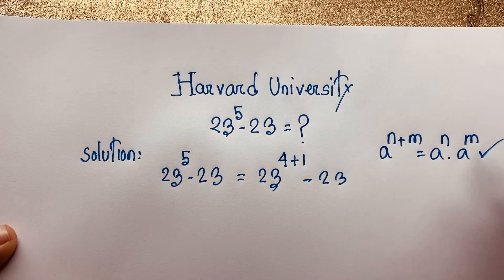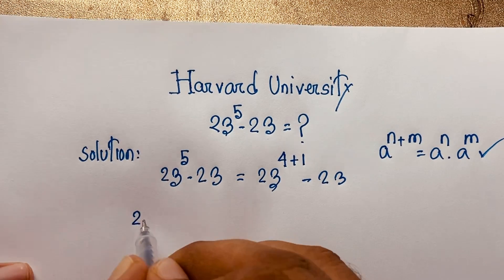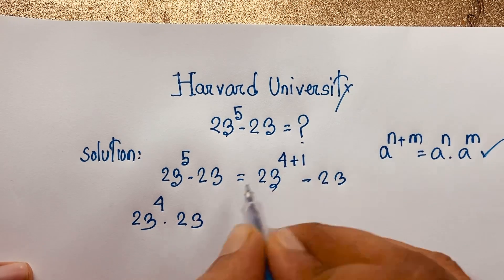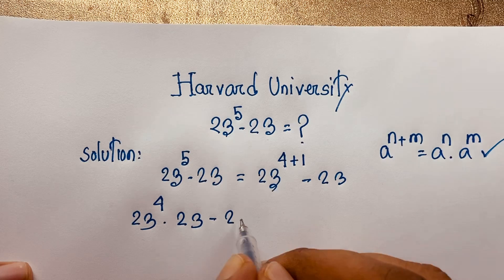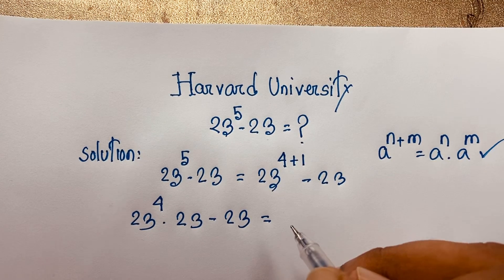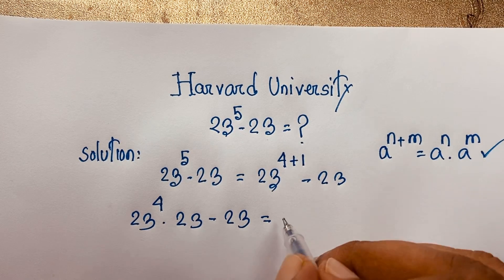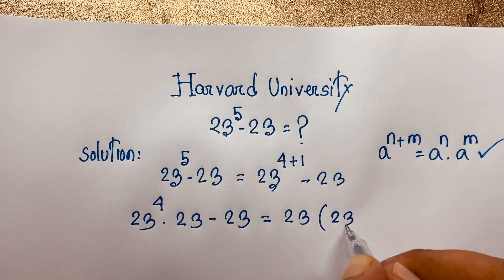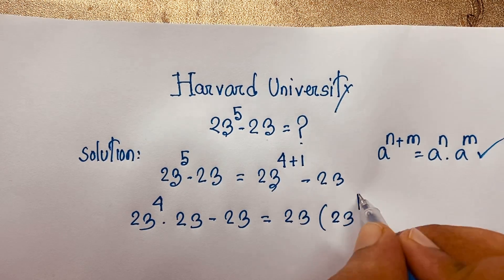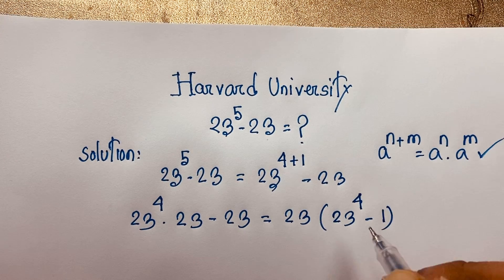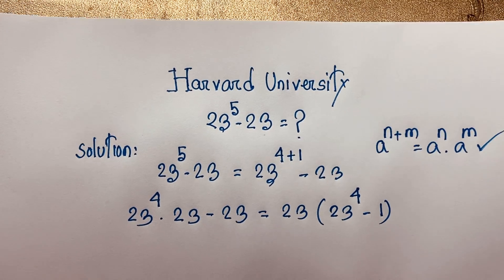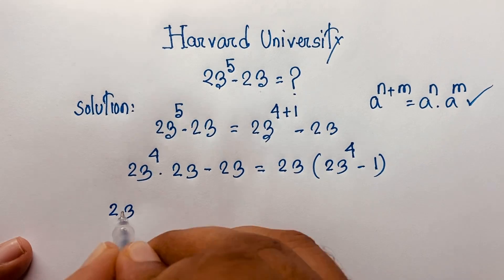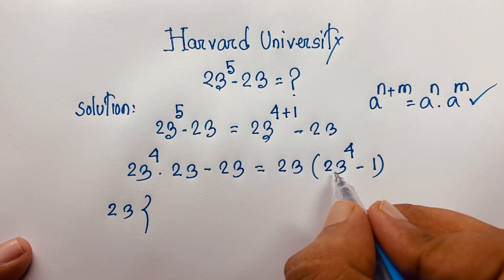Applying this formula here, it becomes 23 to the power 4 times 23 to the power 1, minus 23. That gives us 23 to the power 4 times 23, minus 23. Now 23 is common, so if I take 23 as a common factor, it will be 23 times (23 to the power 4 minus 1).